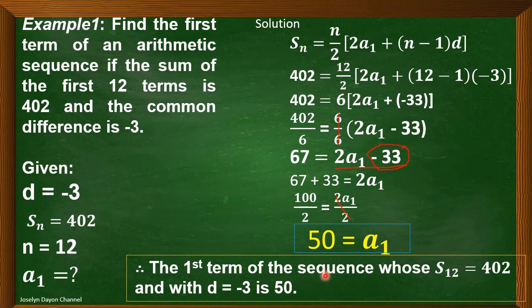So, therefore, the first term of the sequence, whose sum of the first 12 terms is equal to 402, and with the common difference that is equal to negative 3, is 50.